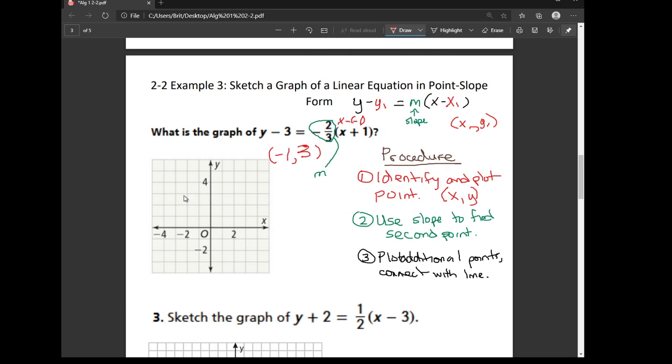And so now we are ready to go to graph this line. So step 1 is to identify and plot our point. So I identified negative 1, 3. So that means I go back 1 on the x axis and up by 3. And remember, if we put a point on a graph, we usually want to label it.